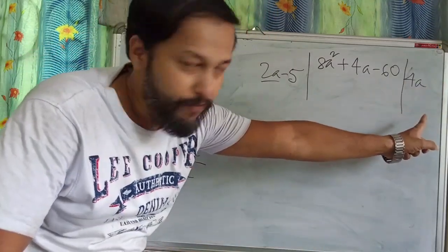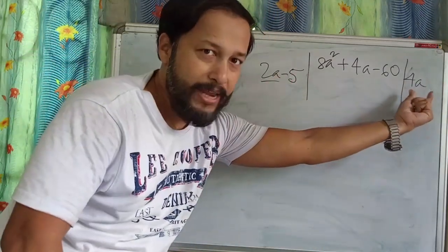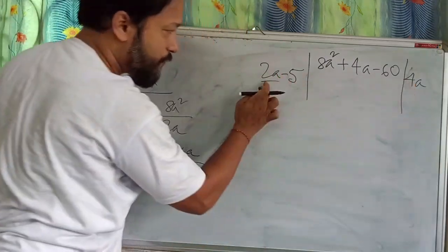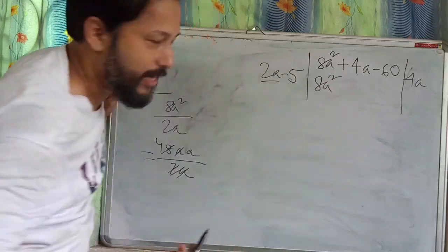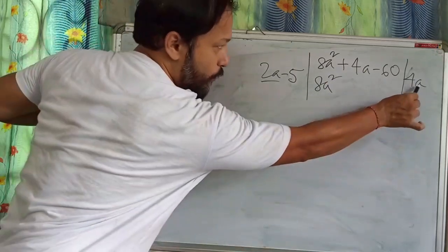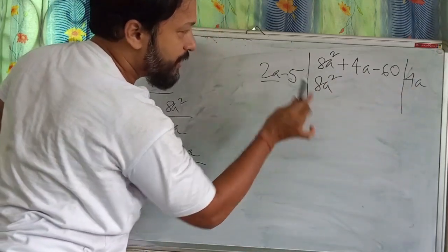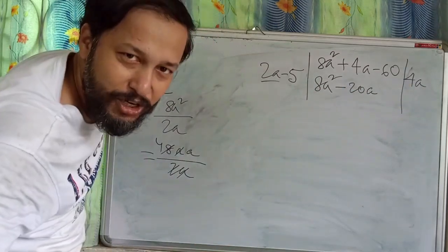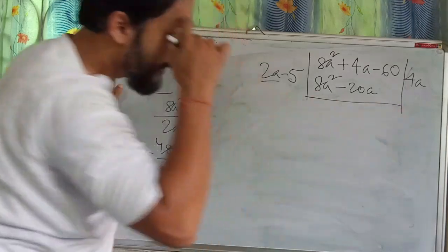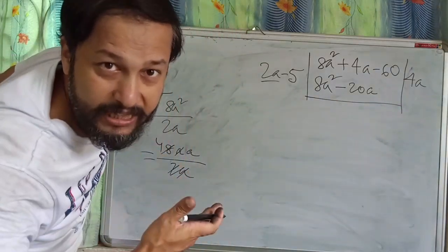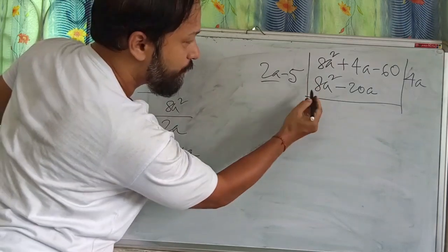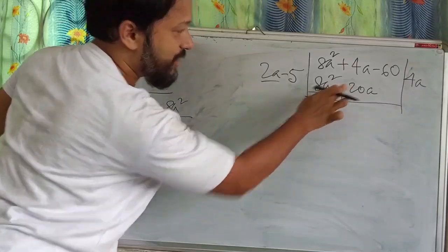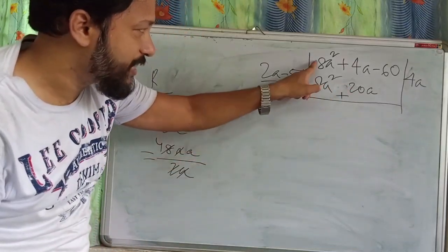By this 4a, we multiply both terms of the divisor. 4a times 2a gives 8a², and 4a times minus 5 gives minus 20a. Now change the sign: plus becomes minus, minus becomes plus. So minus 8a² plus 8a² cancels.